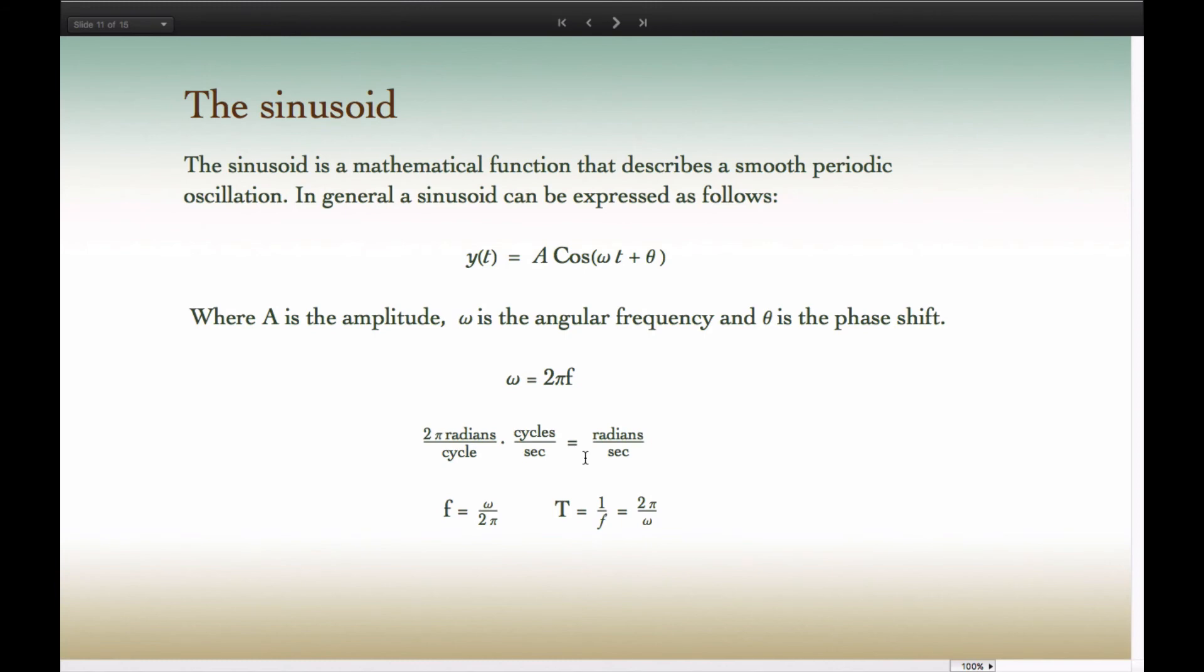Now, we can define the sinusoid as a mathematical function of t that describes a smooth periodic oscillation. The general format for a sinusoid is given here, where a is the amplitude. The coefficient of t is omega, the angular frequency, and here theta is our phase shift. The relationship between the angular frequency and the cyclic frequency is given here. Notice the derivation of this. There are 2π radians per cycle. If you multiply that by the number of cycles per second, which is F, that leaves you with radians per second, which is omega. Frequency can also be expressed as omega over 2π. The period is 1 over the frequency, so it can be expressed in terms of omega as 2π over omega.